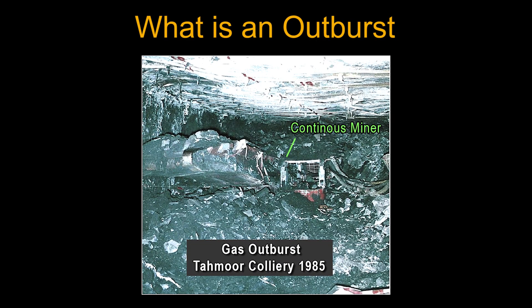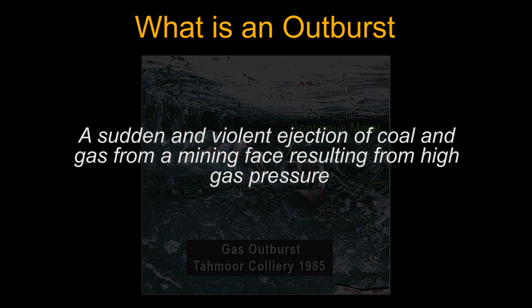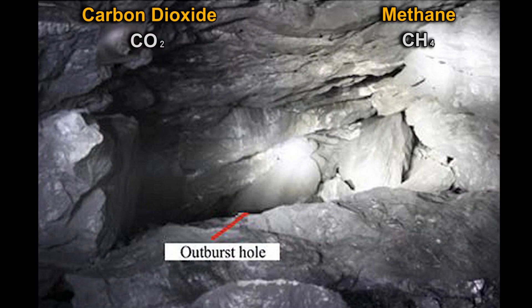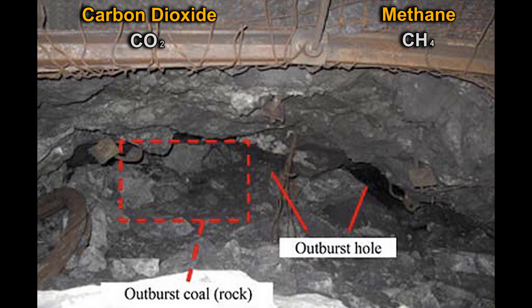An outburst in a coal mine normally refers to a sudden and violent ejection of coal and gas from the mining face as a result of high gas pressure. The gases released normally include either carbon dioxide or methane. Both of these gases are naturally occurring and produced by the coalification process.